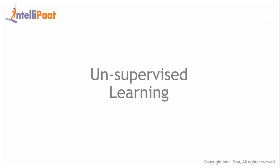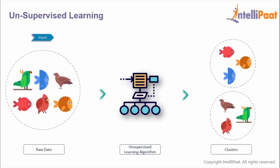Now we'll understand what exactly is unsupervised learning. Unsupervised learning is where we only have input data and no corresponding output variables. The goal is to model the underlying structure or distribution in the data in order to learn more about it. For example, we only have input data without any labels. After applying an unsupervised learning algorithm on this raw data, we get two clusters. This division is done on the basis of similarity in characteristics — the first cluster is comprised of only fish and the second cluster is comprised of only birds.